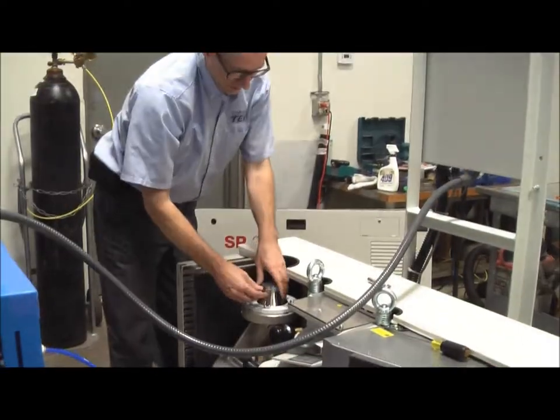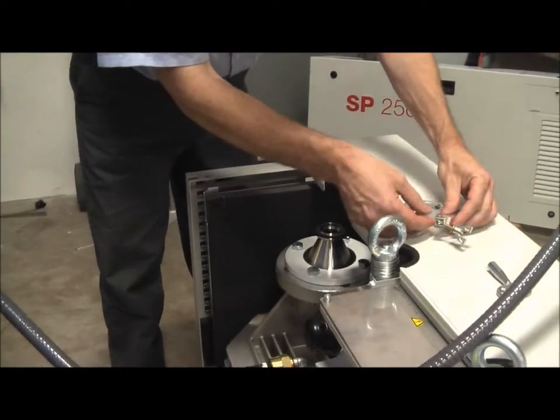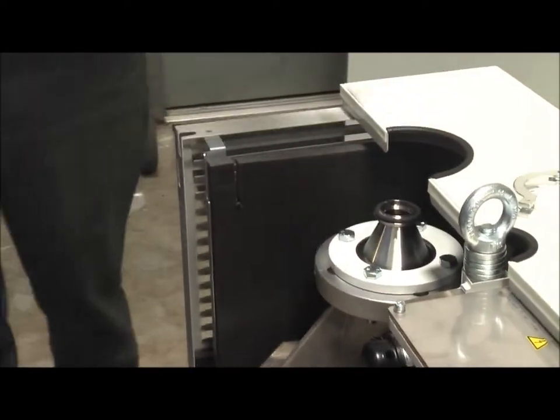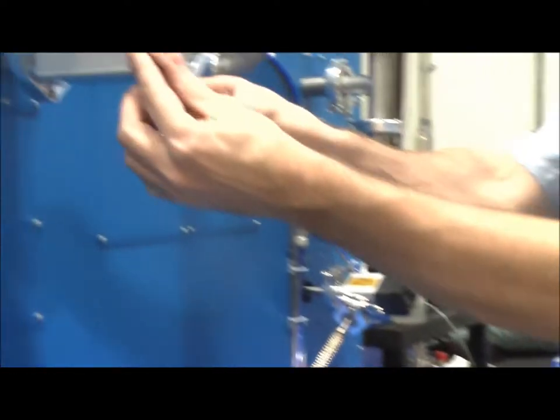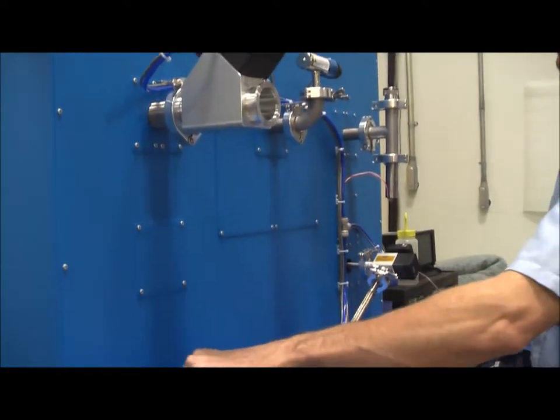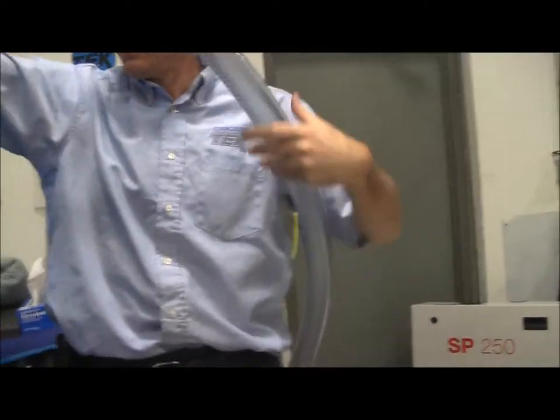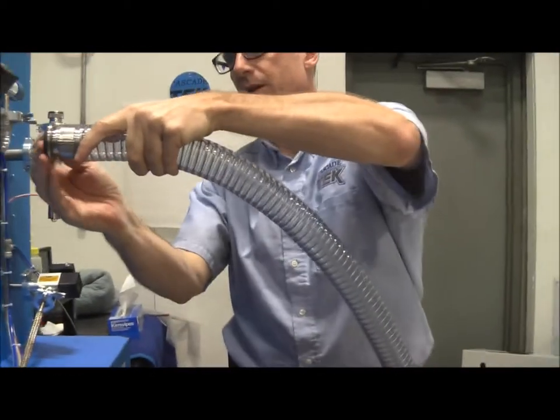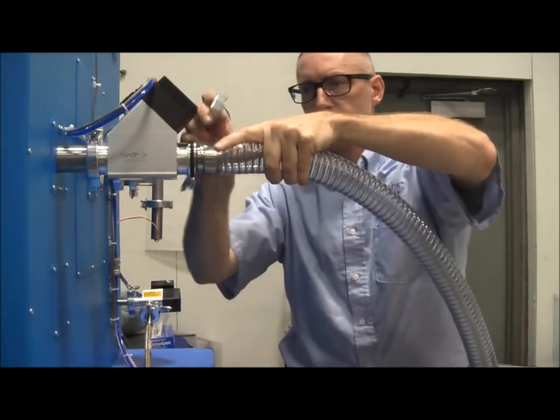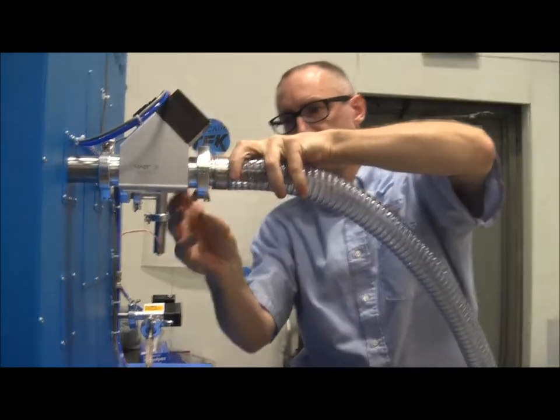We've already installed the adapter to the KF-40, and you have the one on the back of your oven. This is the same as the other style. Now this is a slightly larger pump, so we have a little bit longer hose for this one. Just install this the same way we did before.